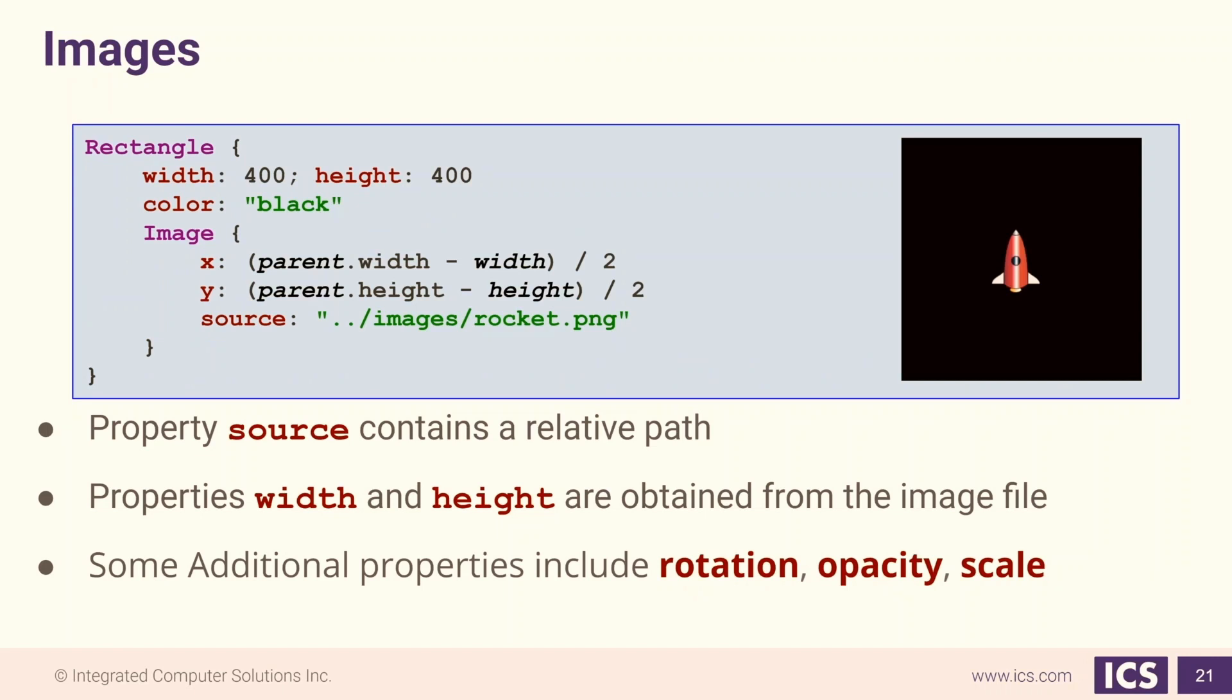The QML type Image allows us to load an image. This image can be a PNG, bitmap, GIF, or JPEG. Images have a source property. This is used to set the source of the image to a URL. The URL can either be relative or absolute.